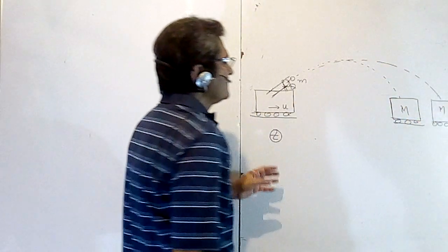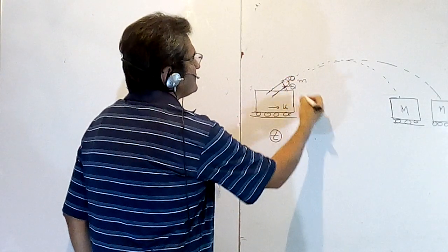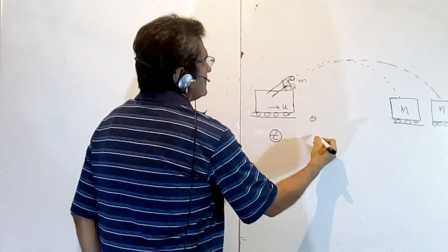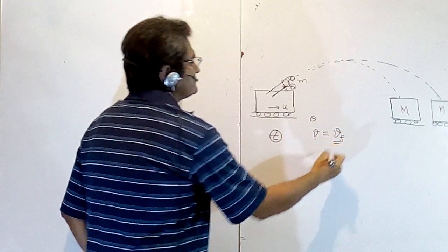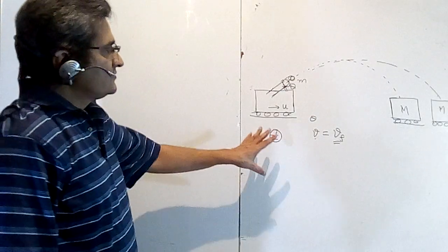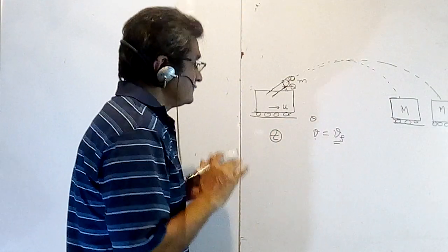And you are given the velocity of firing of the cannon - angle is given as theta and velocity of firing is given as some Vf. So in such questions, the first care which you should keep, the precaution which you should take, is if the velocity of firing of the cannon is given, whether that velocity is in the absolute frame or in reference to this frame - that has to be seen.